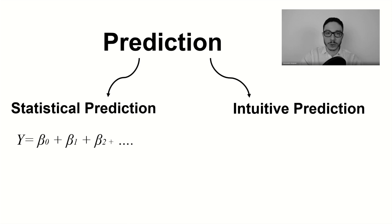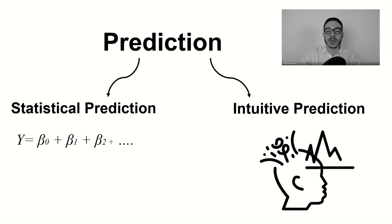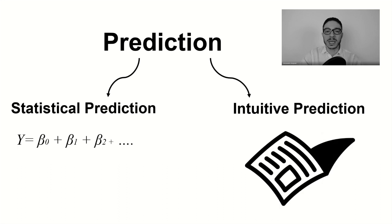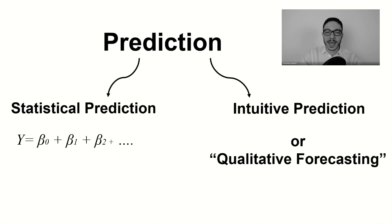The second meaning we attach to the term prediction is actually intuitive knowledge about events that may happen at a specific date in the future, based on previous knowledge and experience. This is not rigorous - it's not done mathematically or statistically, it's just based on your intuition. This is the meaning of the term prediction that we often use in common language, the meaning you'll see in newspapers. Sometimes this kind of prediction is also called qualitative forecasting, but this is quite rare.